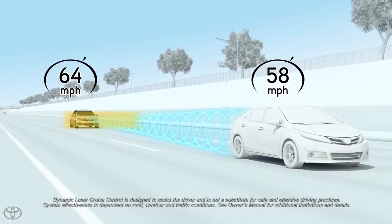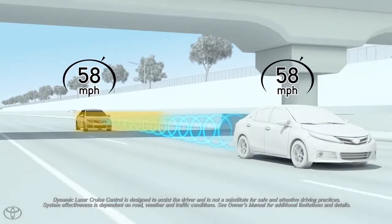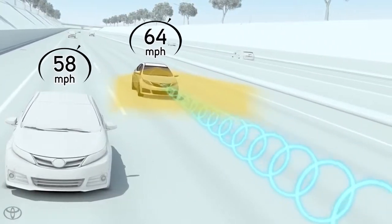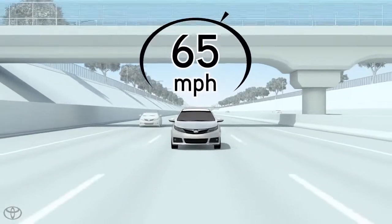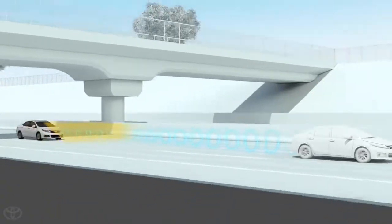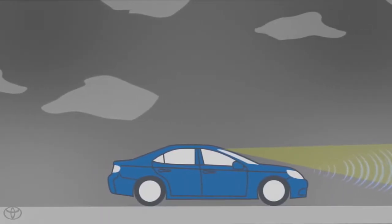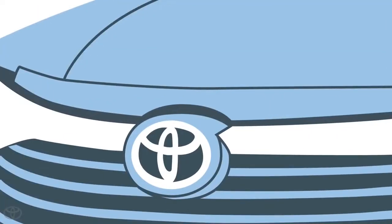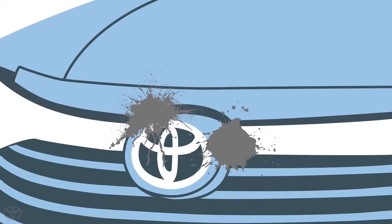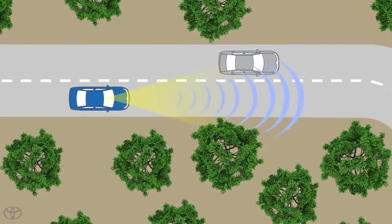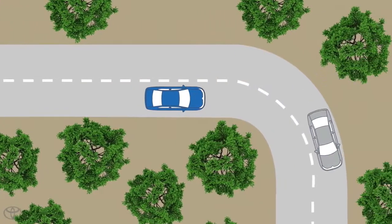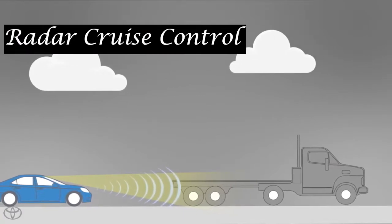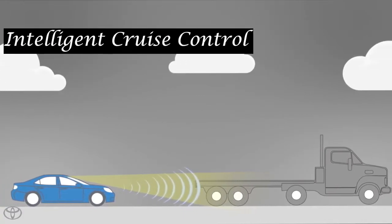The ACC system uses a camera and radar sensor at the front of the vehicle to maintain distance from the vehicle ahead, adjusting speed by braking or accelerating accordingly. This system is also referred to as the first level of autonomous driving, though the driver must remain alert due to challenges like bad weather, sensor obstruction, and cornering. Other names for ACC include active cruise control, dynamic cruise control, radar cruise control, automatic cruise control, and intelligent cruise control.